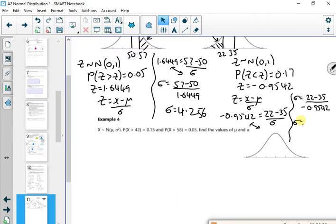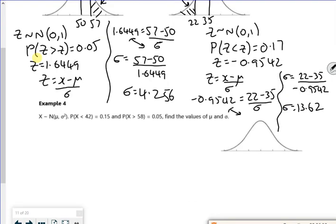So 22 minus 35 over sigma minus on top, and then minus 0.9542. So z value of 13.62. Sorry, sigma, 13.62. There we go. There's another example. Let's have a look at that one. So that's question 4.